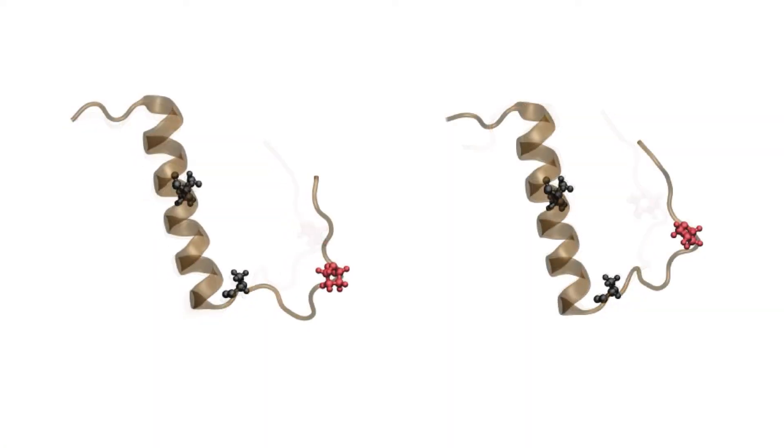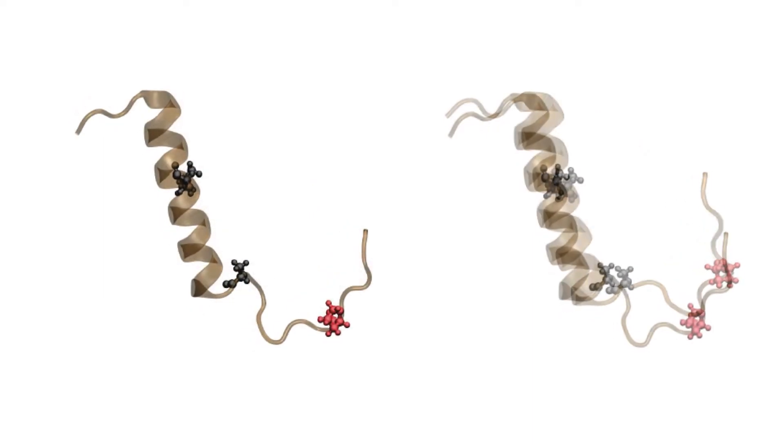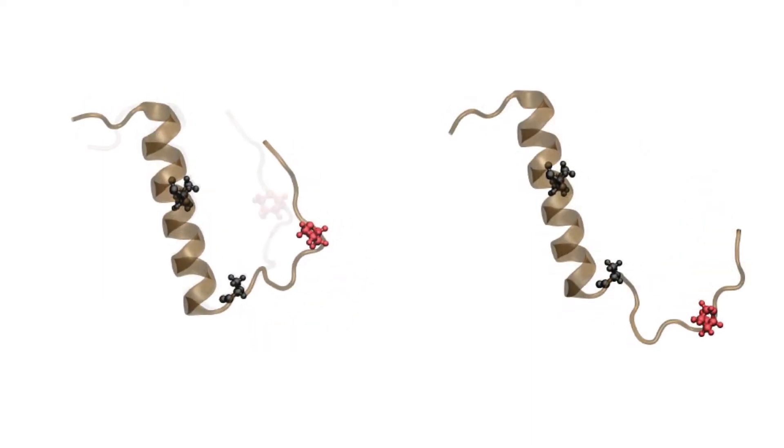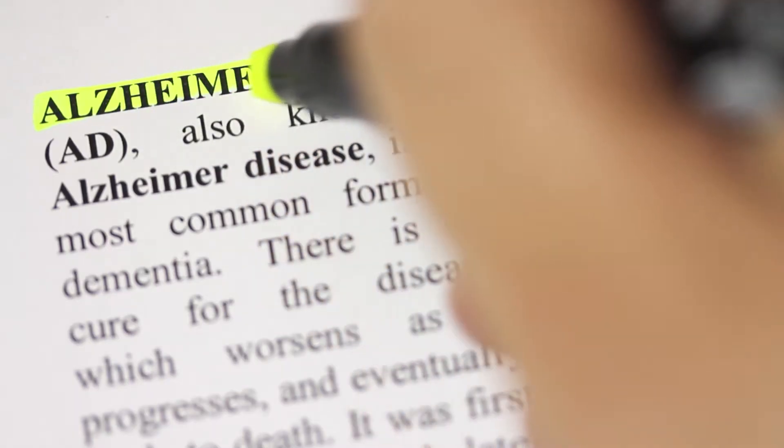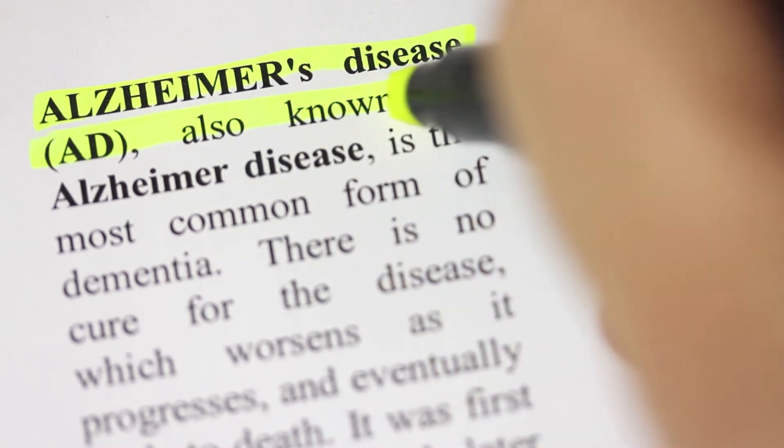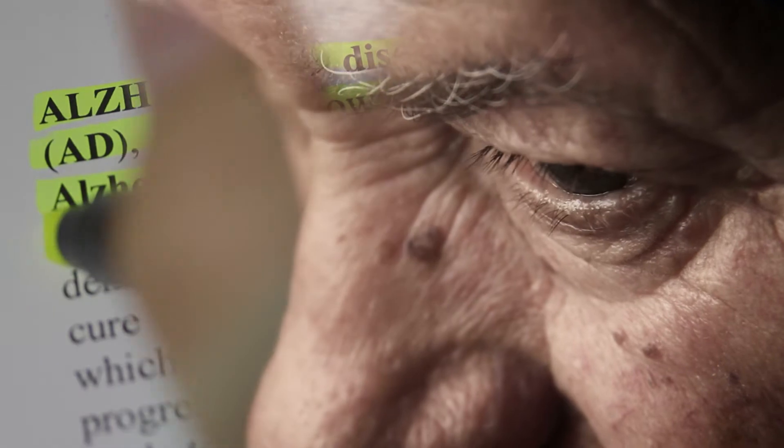One example is a protein called neuropeptide Y. There have been implications found that it may affect the formation of aggregates in your brain that are part of Alzheimer's. If we could understand the binding of this peptide, we might better be able to address how your brain is affected by the presence of neuropeptide Y.